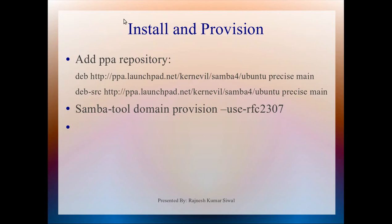That was the generic overview of Samba 4. Now, coming to the lab: we have installed Ubuntu 12.4. The reason I didn't use RHEL or CentOS is that there is no RPM available yet, and compiling would be time-consuming. For Ubuntu 12.4, the dev package is available, and you need to add two repository entries to apt sources.list.